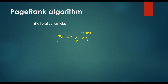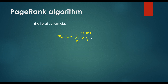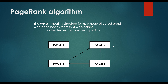We end up with an iterative formula, because we have to make several iterations. It is very similar to the original — we make a summation, taking the PageRank of each incoming website and dividing it by the number of outgoing links. We sum over p sub j, which are the websites pointing to p sub i. For example, if we want to calculate the PageRank of Page 2, we have to consider every single page that points to Page 2.